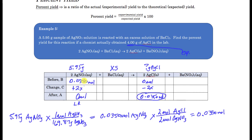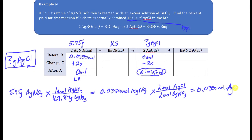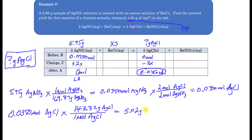You should definitely show the calculation, and if you're using the table you'd want to solve for x as shown in previous videos. The next thing we need is the theoretical mass of silver chloride — that's what we're looking for. The last step to get the mass is to take those 0.0350 moles of silver chloride and convert to grams using the molar mass of silver chloride.